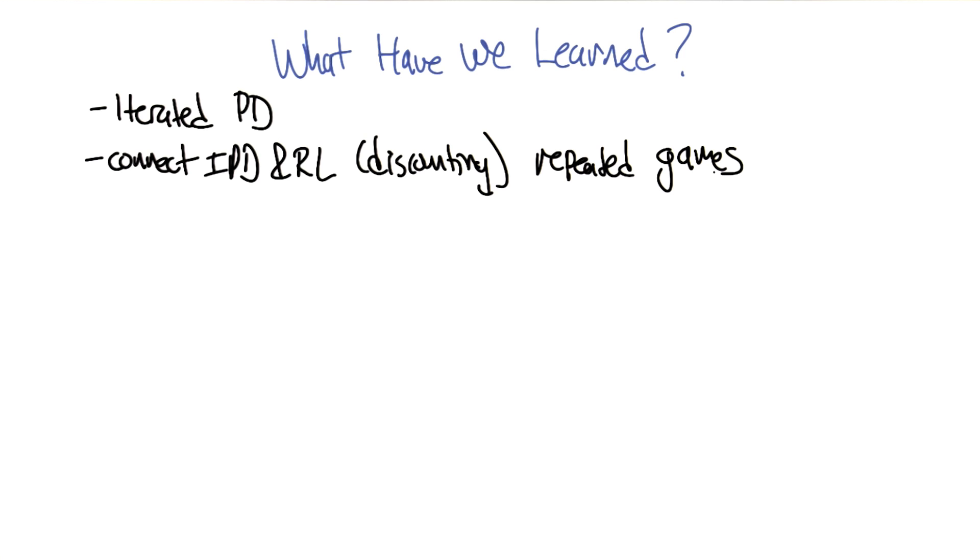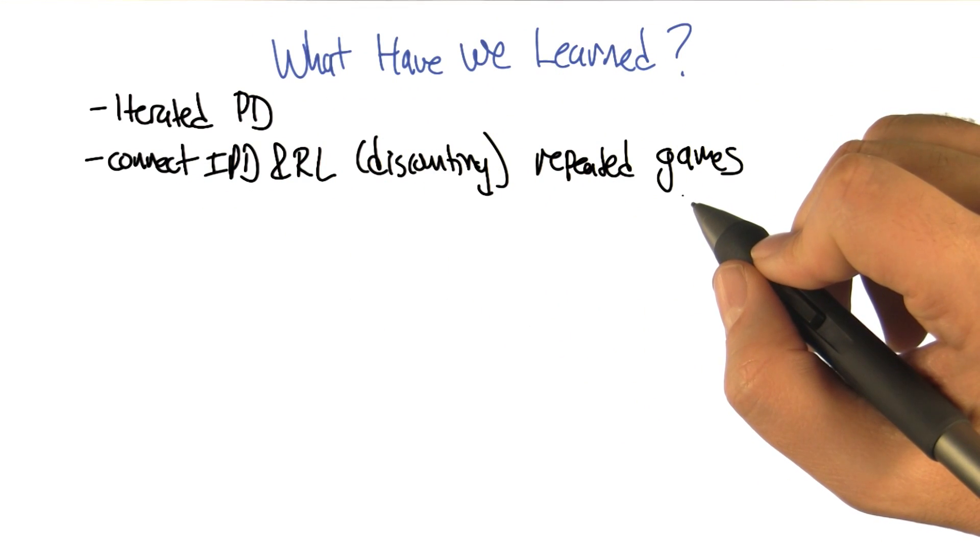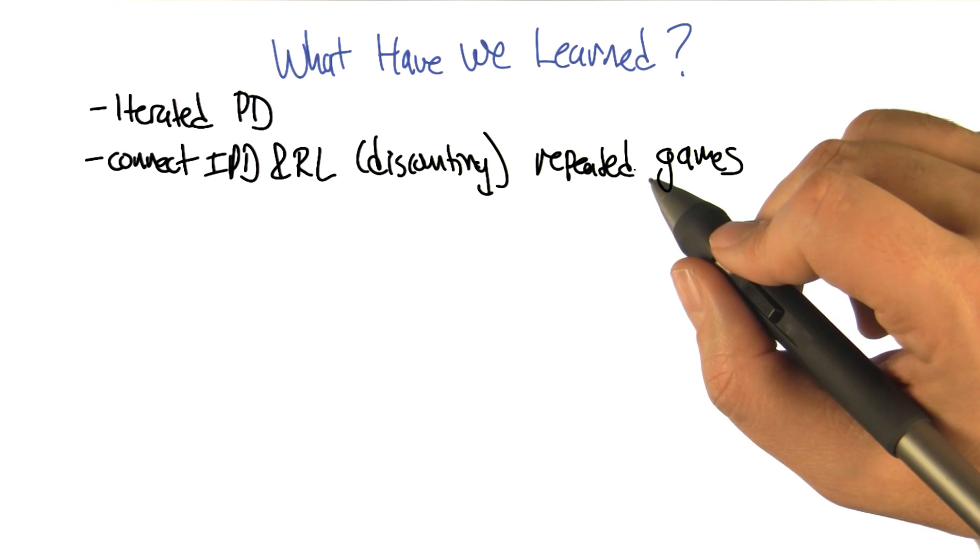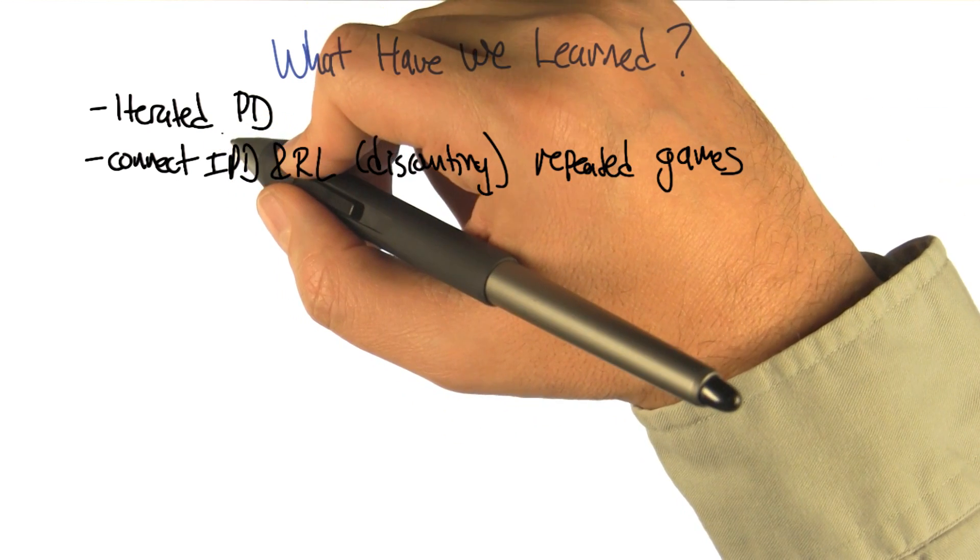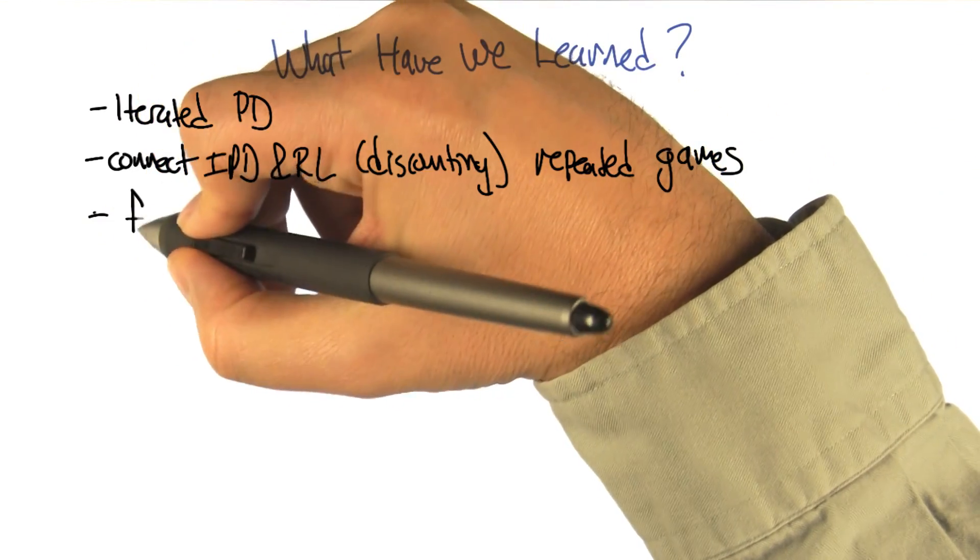And then we learned other things, like for example, I don't remember. What did we learn? Well, so the connection between iterated prisoner's dilemma and repeated games was the idea that we can actually encourage cooperation. And in fact, there's a whole bunch of new Nash equilibria that appear when you work in repeated games, and that was the concept of the folk theorem.